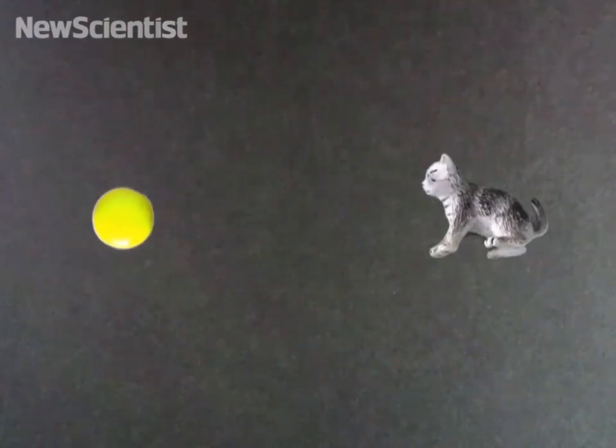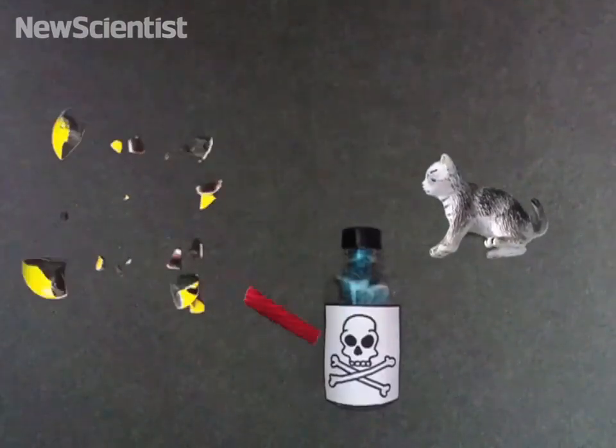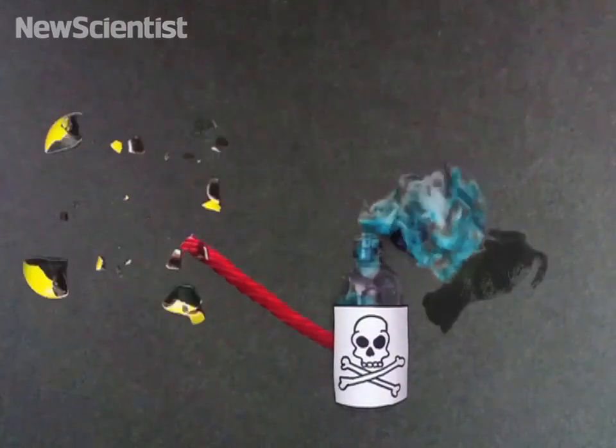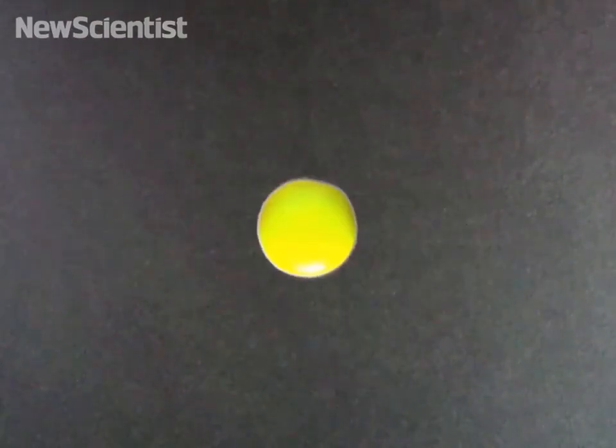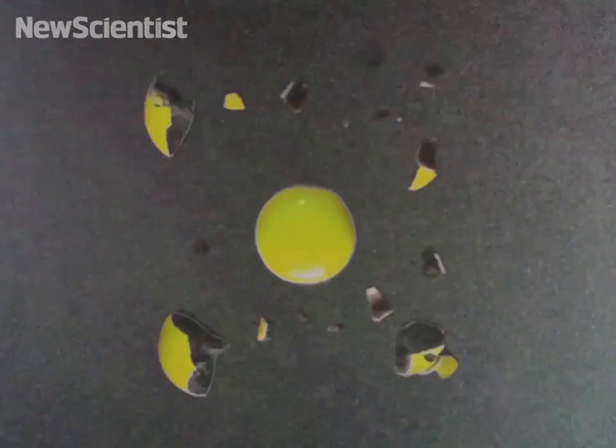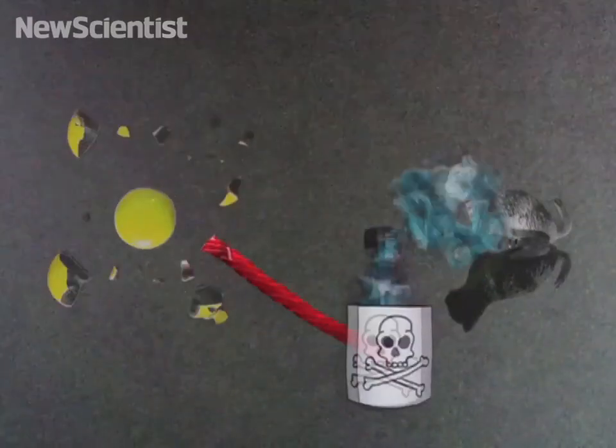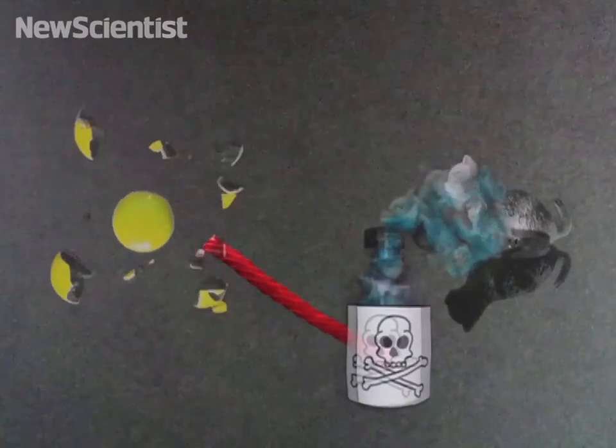This is an atom, and this is a cat. If the atom decays, this device will kill the cat. But according to quantum theory, until you measure it, the atom has both decayed and not decayed. So does that mean the cat is both dead and alive?